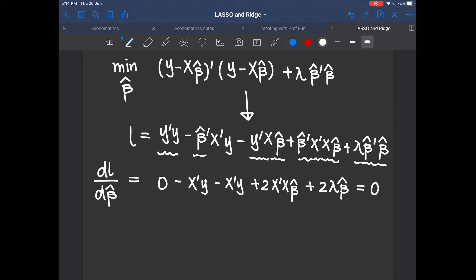So now you just need to shift the terms around and you will get 2 multiply x transpose x beta hat plus 2 lambda beta hat is equal to 2 x transpose y. And you can simply cancel out the 2 on both sides.